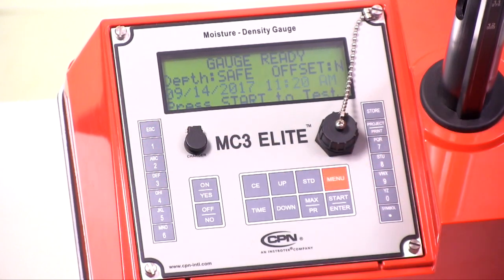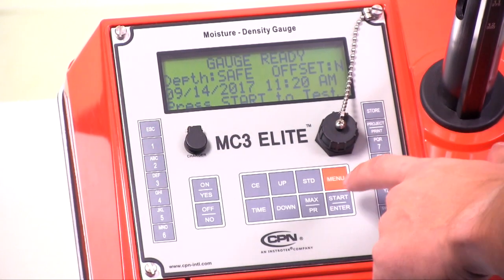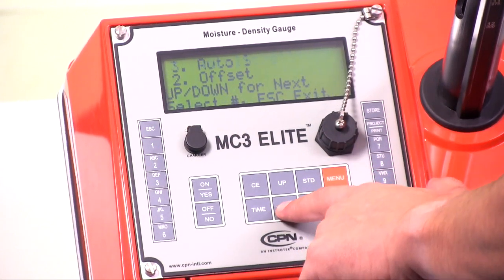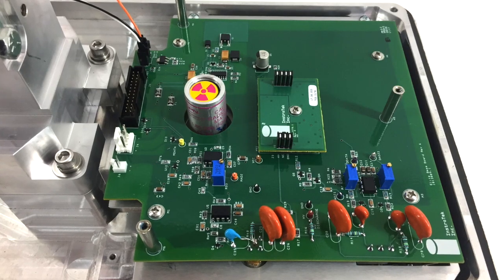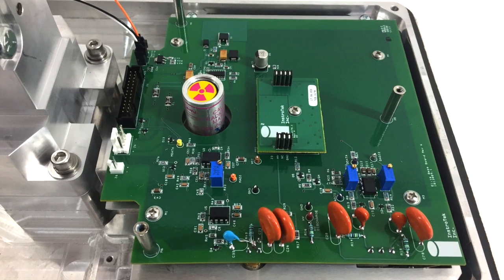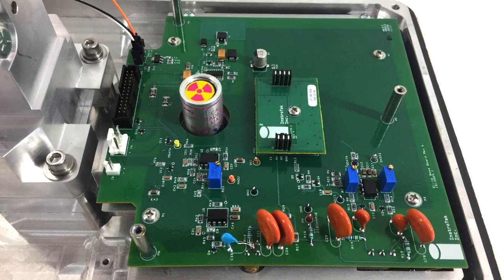A redesigned overlay keyboard and crisp four-line half-inch character LCD display make it easy to operate and see test results, even in direct sunlight. On the inside, the CPN Elite Gauge's new surface mount electronics are sealed to be more resistant to debris and moisture.